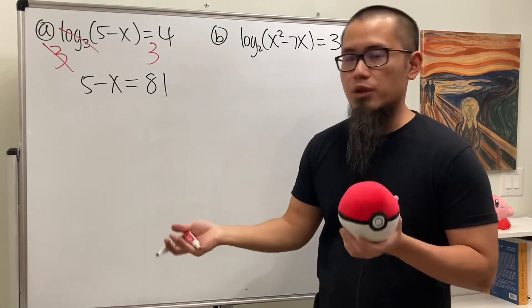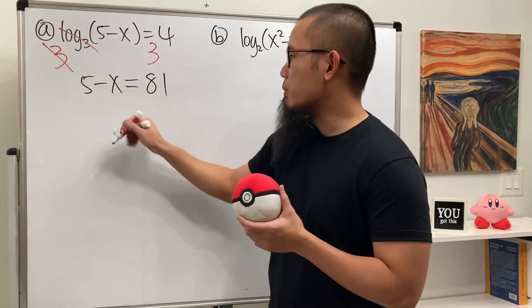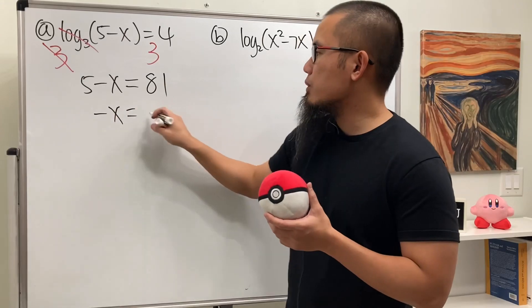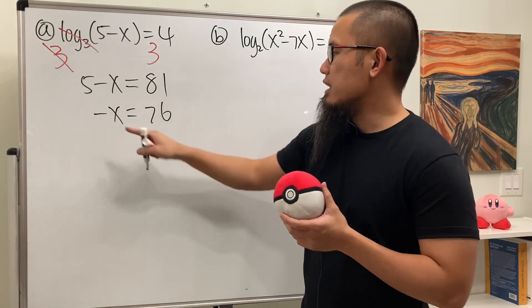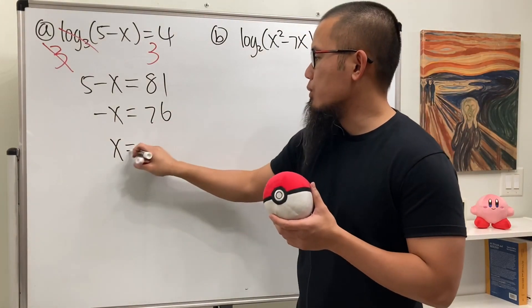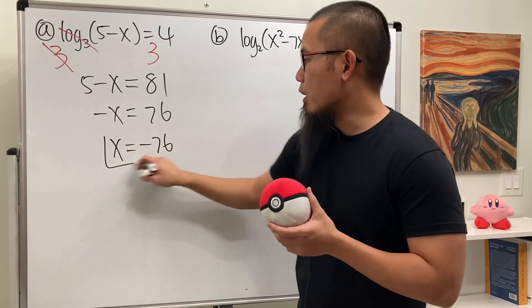From here, we can just solve a regular equation. Minus 5 on both sides, we get negative x is equal to 76, and then divide both sides by negative, so we get x is equal to negative 76. And then we are done.